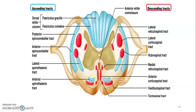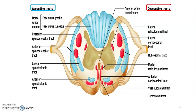The descending tracts: we have the lateral and anterior corticospinal tracts, running from the cerebral cortex to the spinal cord carrying motor information. Then lateral and medial reticulospinal tracts from the reticular formation to the spinal cord. The rubrospinal tract runs from the red nucleus in the midbrain to the spinal cord, passing in the lateral column. In the anterior column: vestibulospinal from the vestibular nucleus and tectospinal from the tectum — the superior and inferior colliculi — to the spinal cord.